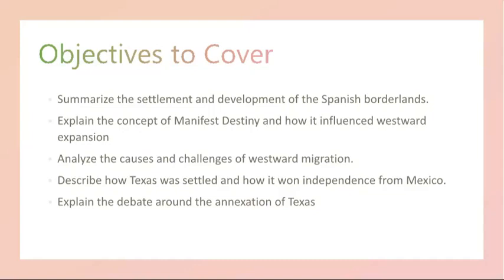Manifest destiny was a 19th century belief that held that the United States was destined to expand across the North American continent from the Atlantic to the Pacific Ocean. This idea had a profound influence on westward expansion. It was motivated by several factors, including the economic opportunities offered by fertile land, the lure of the frontier, and the conviction that the nation had a divine mission to fulfill.